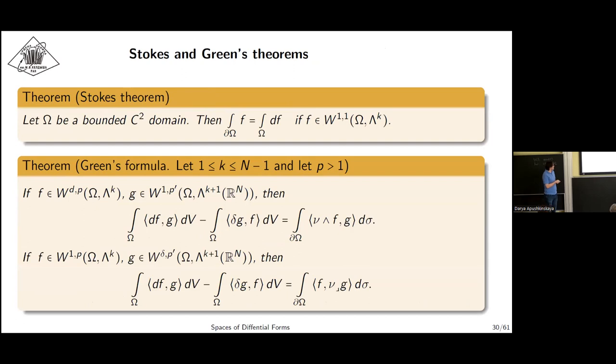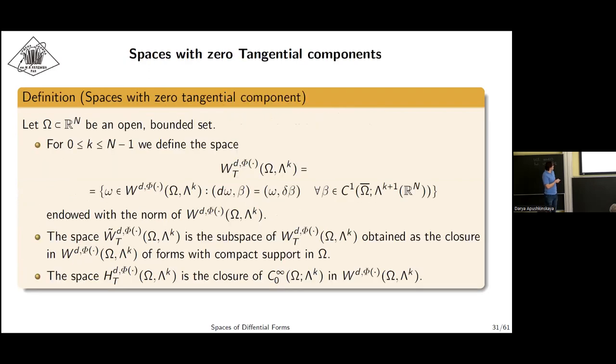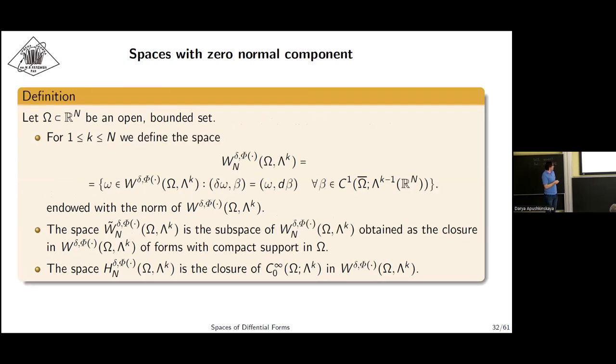These are standard Green formulas for forms. This leads to also rather standard definitions of forms with vanishing normal or tangential components. This is also a generalization from standard identities of 3D vector calculus.